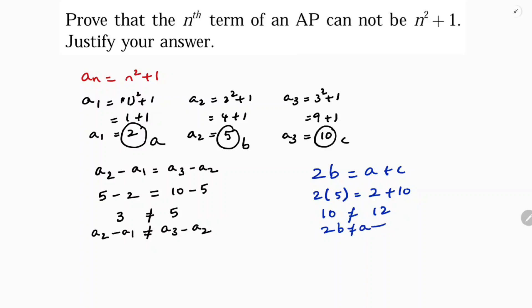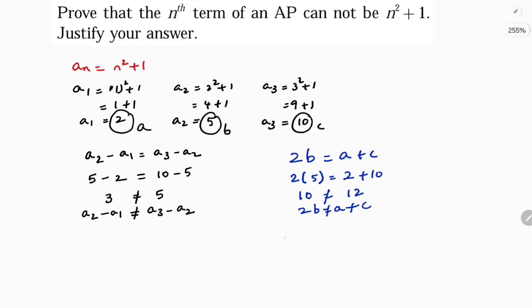Therefore, 2b is not equal to a plus c. Therefore, the given series n square plus 1 cannot form an AP. n square plus 1 cannot be the nth term of an AP.